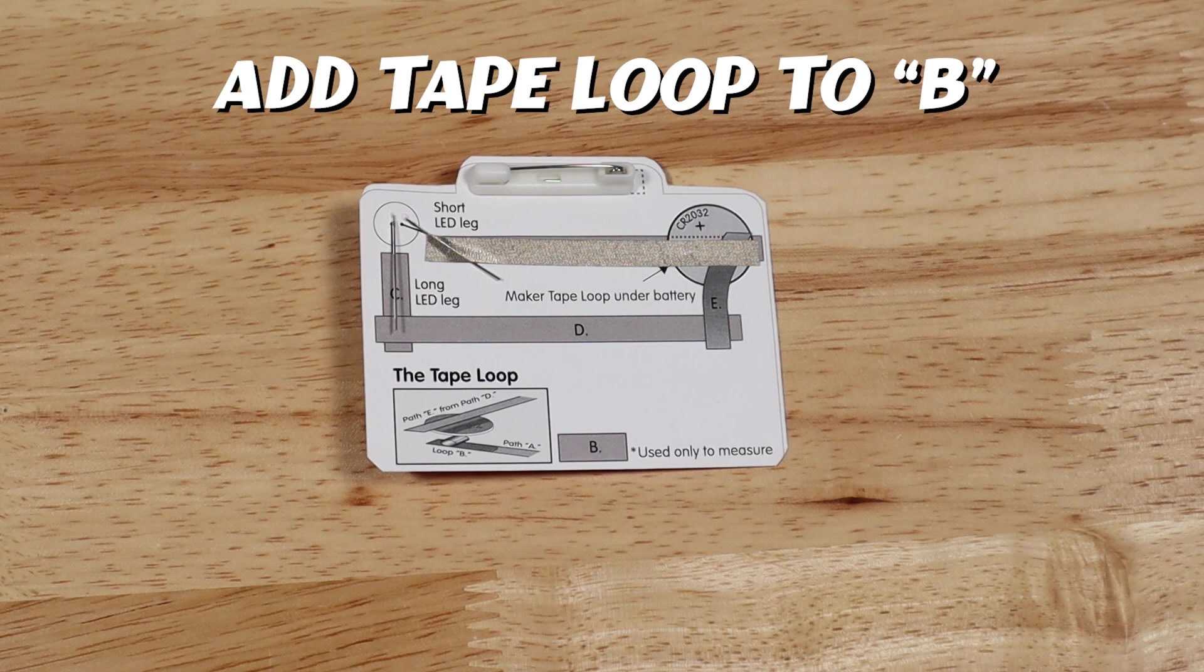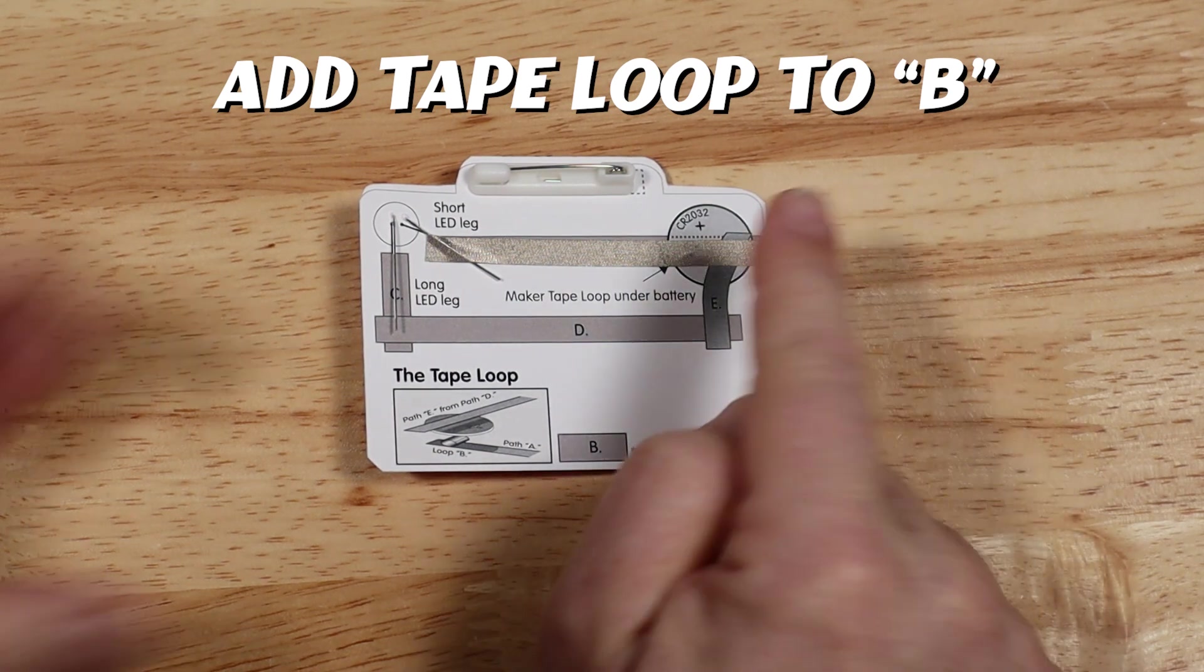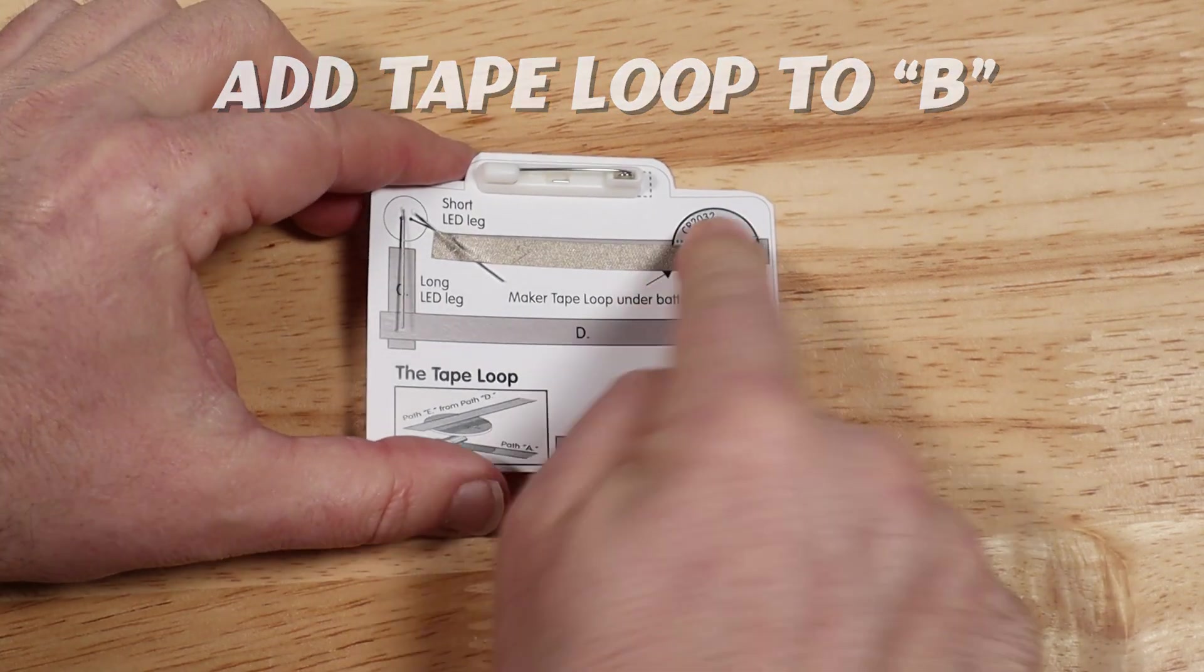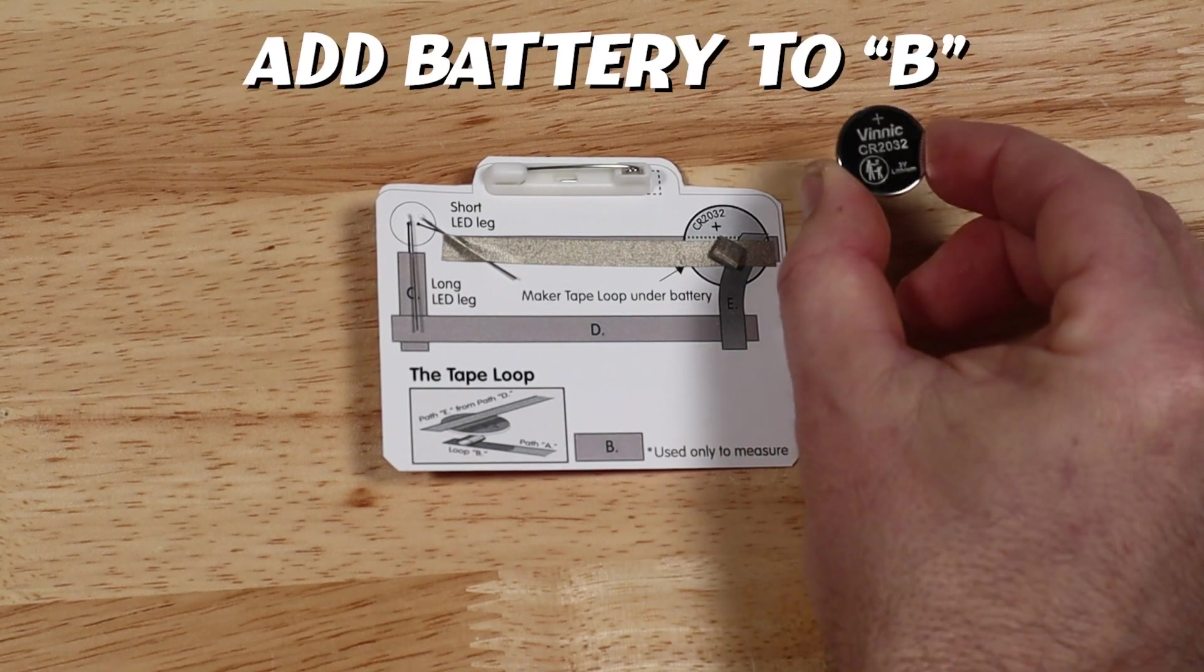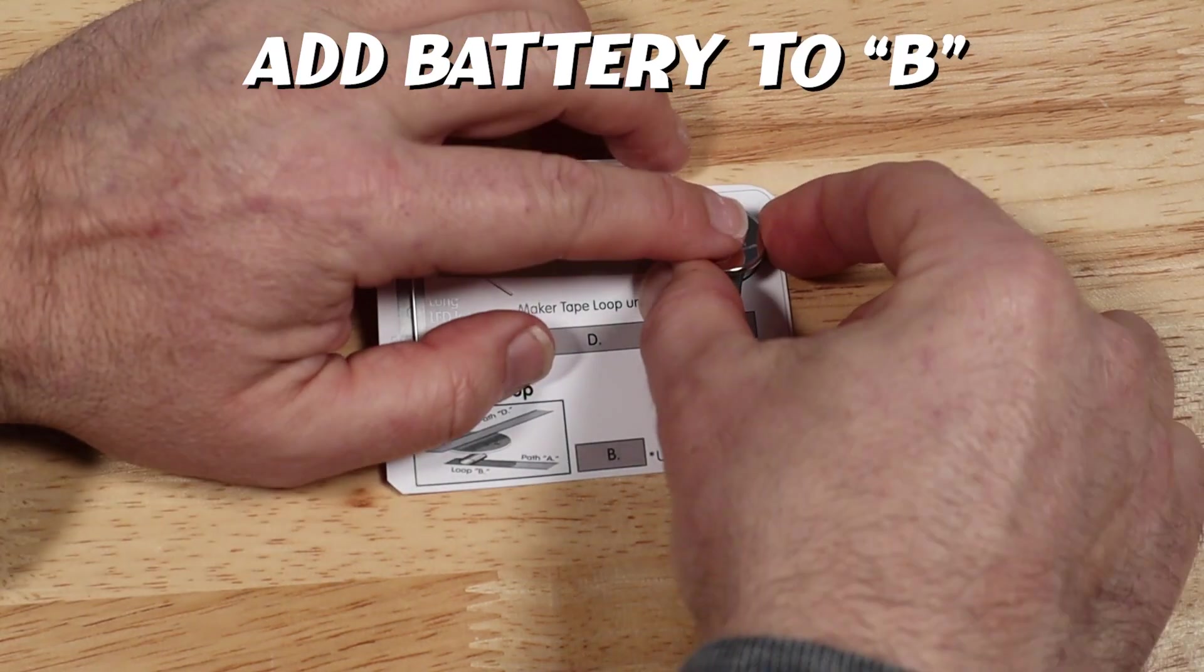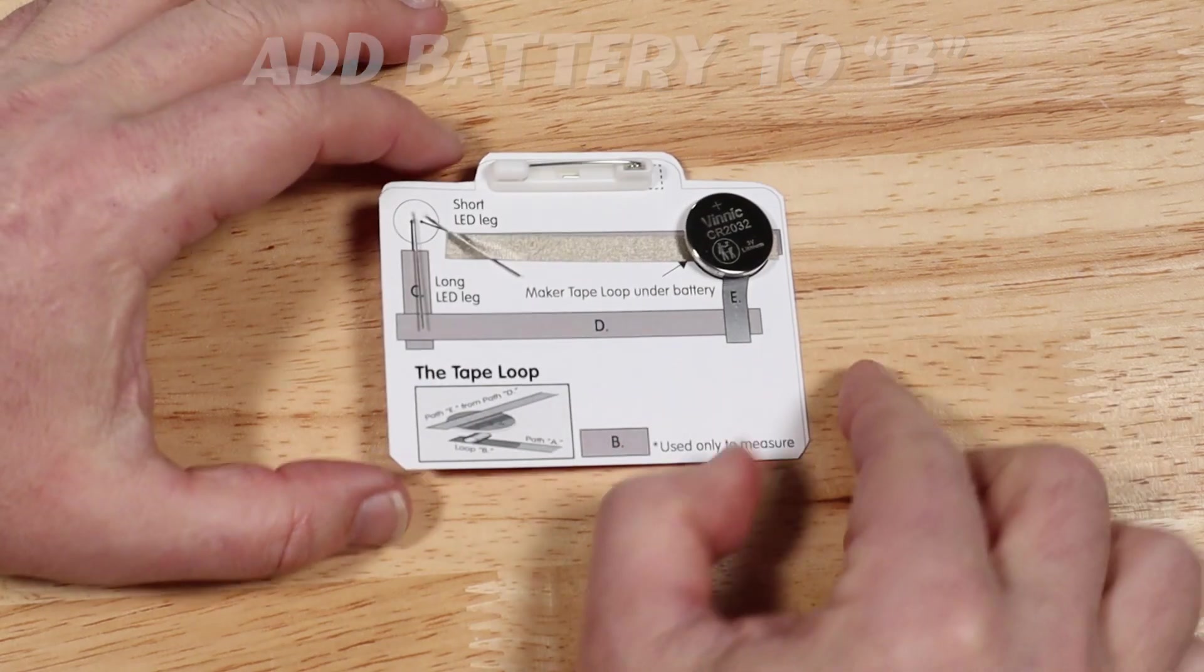Next, cut a short piece of maker tape and form it into a loop. Press that loop into place at B. Now we're going to add the battery. Place the battery over the top of the tape loop, positive side up.